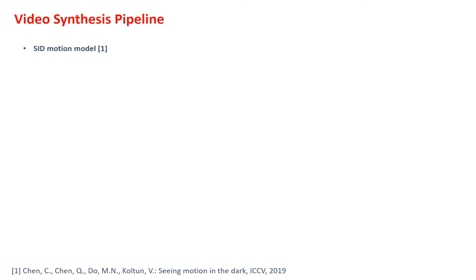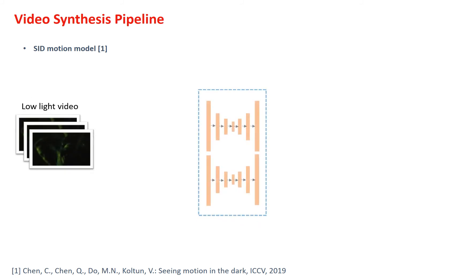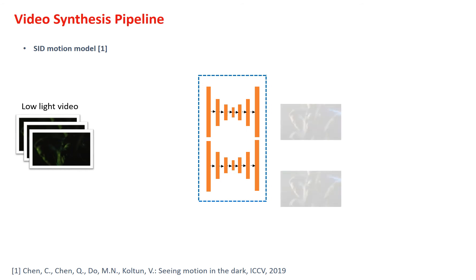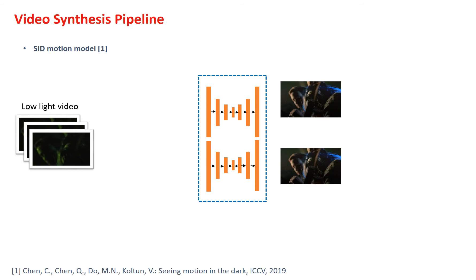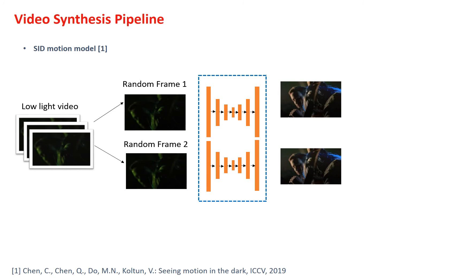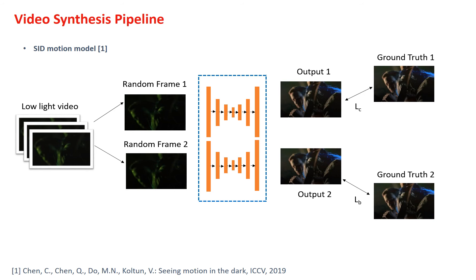We use the generated synthetic video data to train a forward model capable of mapping low-light raw video to long exposure RGB. We adopt a previously published state-of-the-art motion model called SID Motion, implemented as a Siamese network. The network accepts two random raw video frames as input and predicts the corresponding long exposure outputs. A VGG feature loss is computed between the two outputs and the ground truth images. An additional loss term between the two predictions encourages temporal stability. This forward architecture is more suitable to exploit the temporal dimension of the synthetic video.